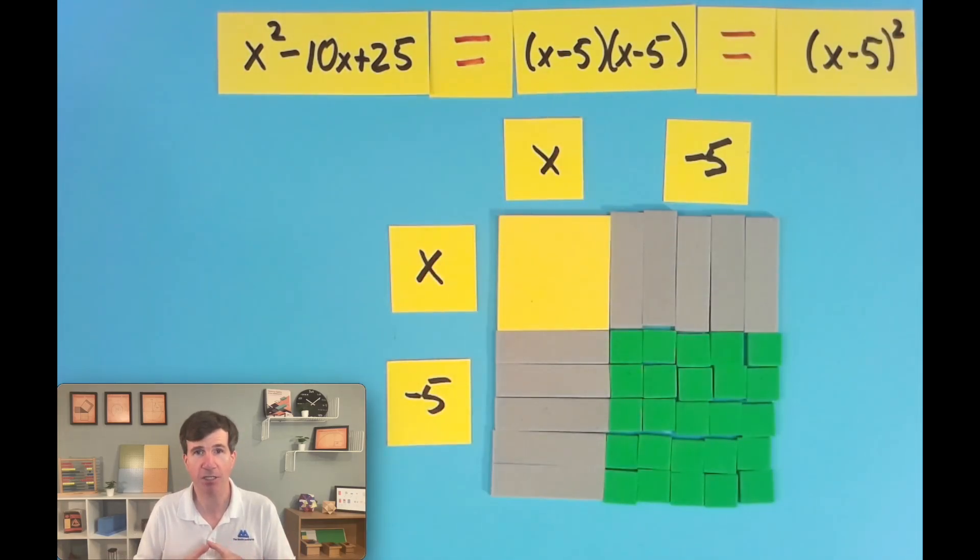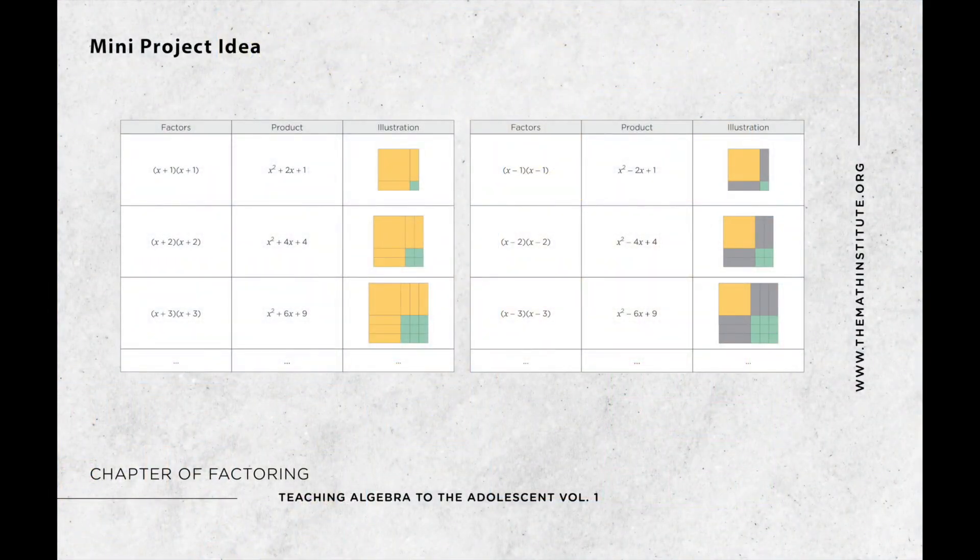So they can make a chart that looks something like this. So here we have the factors, the product, and an illustration. So this could be a little mini project that students can do. And really we just want them to be observing the patterns that they see. They could even write about it if they want to, which leads us into the next lesson. And that's where we could kind of consolidate that information.